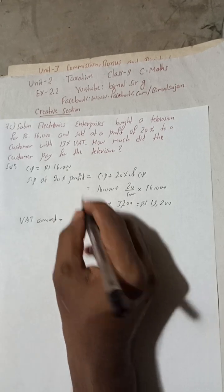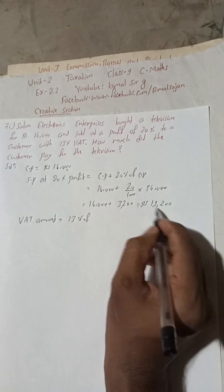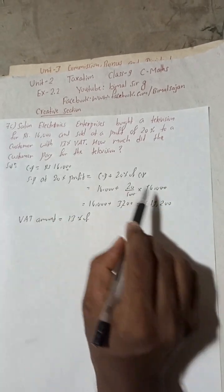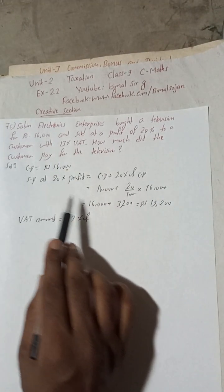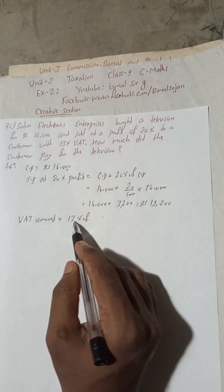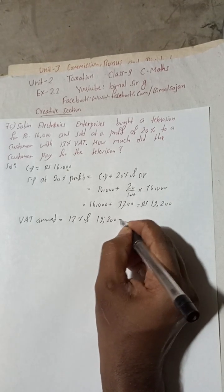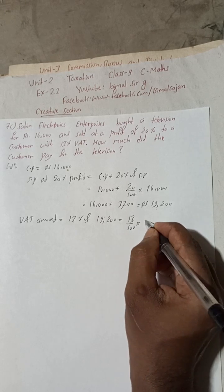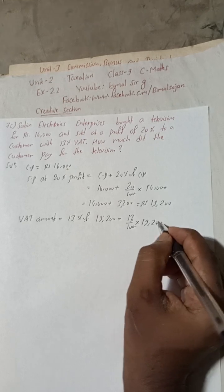So VAT amount will be how much? 13% of this amount. Because when in the previous exercise, when there was the discount percent, we were calculating first SP with discount and then we were applying the VAT. But here is no discount, so just directly 13% of this much.